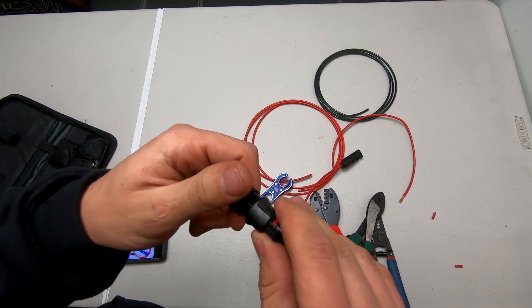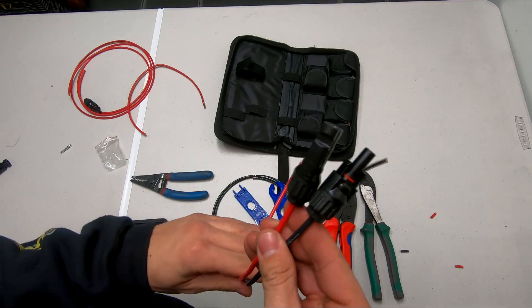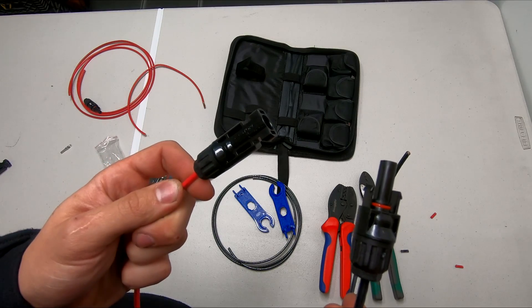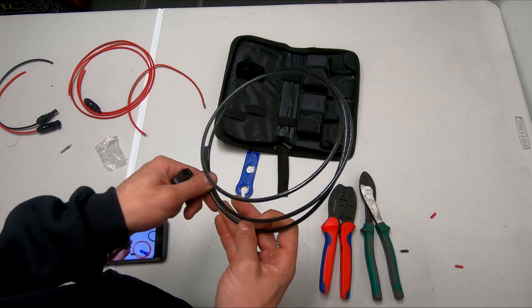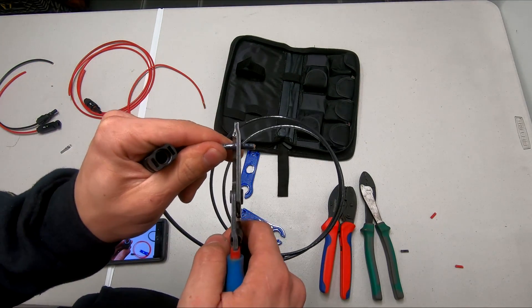This would be your positive and negative from your solar panel. Again, negative has a male connector and positive has the female connector. Then if I were making a negative cable to my charge controller, in this case I'm going to show that with black again, strip it back a half an inch.